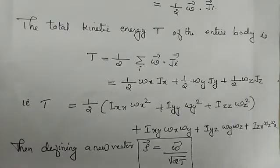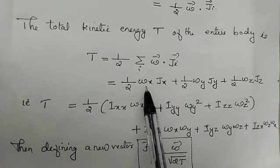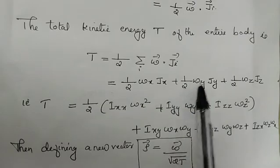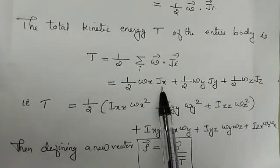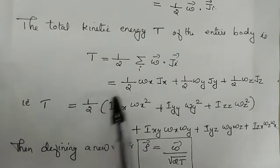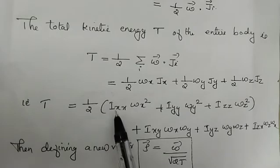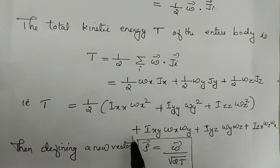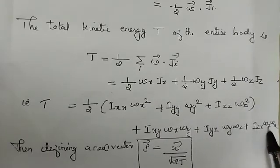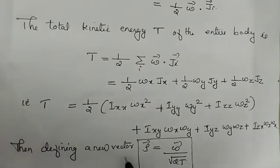Recognizing that r_i cross m_i v_i is the angular momentum j_i, the total kinetic energy T of the rigid body is given by one-half (omega_x J_x plus omega_y J_y plus omega_z J_z), which equals one-half [I_xx omega_x² plus I_yy omega_y² plus I_zz omega_z² plus I_xy omega_x omega_y plus I_yz omega_y omega_z plus I_xz omega_x omega_z]. Defining a new vector rho equal to omega divided by root of 2T.